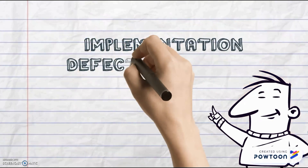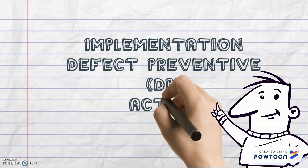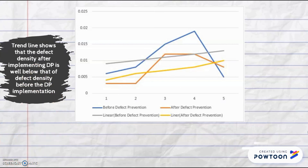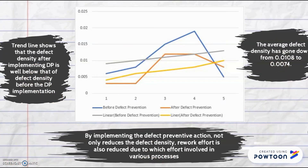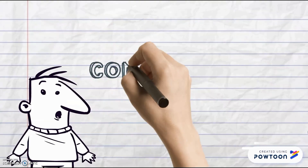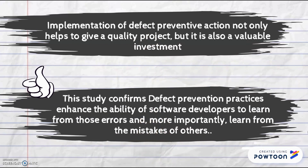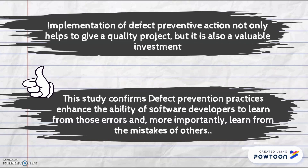Let's move on to the implementation of defect preventive action. For each cause, possible preventive actions are discussed and finally agreed upon among project team members. To see the effectiveness of using defect prevention action, it was implemented in the next set of five similar projects and the process improvement was observed in terms of average defect density. The graph represents the distribution of defect density for five similar projects before and after implementing defect prevention. Implementation of defect preventive action not only helps to deliver a quality project but is also a valuable investment. The study confirmed that defect prevention practice enhanced the ability of software developers to learn from errors and, more importantly, learn from the mistakes of others.